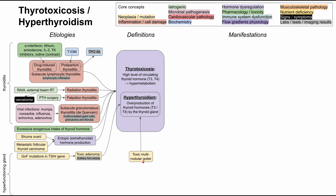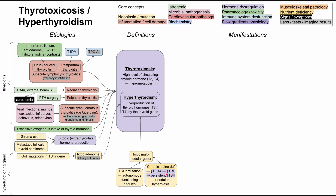It's also possible to get hyperthyroidism from a toxic multinodular goiter. There are two etiologies, roughly 50-50. The first is a TSH receptor mutation resulting in autonomously functioning nodules. The other is a chronic condition where a patient has long-standing iodine deficiency, resulting in chronically low T3 and T4. The body's feedback mechanisms then increase TRH secretion — from the hypothalamus, which stimulates the pituitary, which stimulates the thyroid — and this results in a persistent increase in TSH.